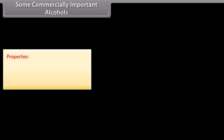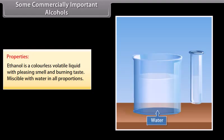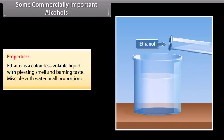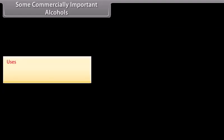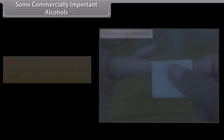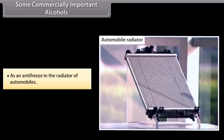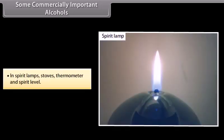Properties: ethanol is a colourless, volatile liquid with a pleasing smell and burning taste, miscible with water in all proportions. Uses: as an antiseptic in the form of rectified spirit; as an antifreeze in the radiator of automobiles; and in spirit lamps, stoves, thermometers and spirit levels.